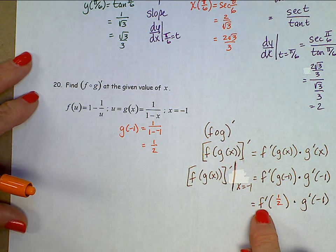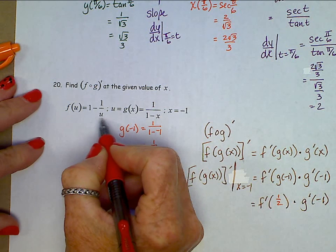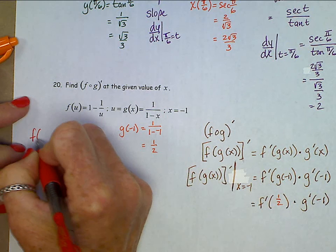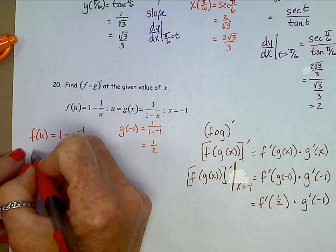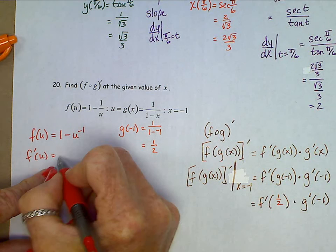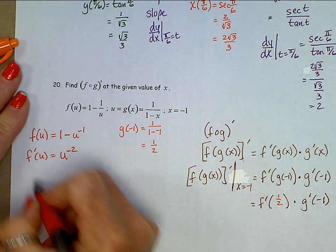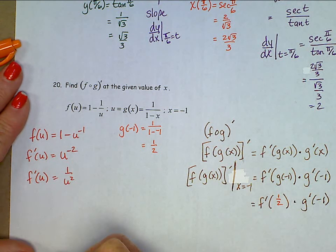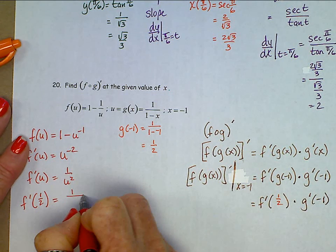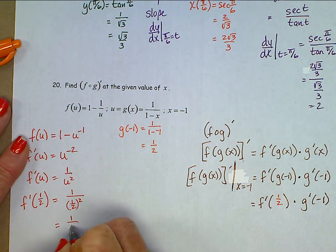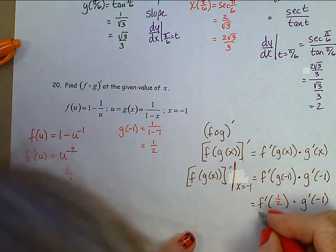This says find f prime of a half. Let's find f prime. First thing though, let's rewrite that f function as 1 minus u to the negative 1, then we don't have to do a quotient rule. This will give us f prime, the negative 1 comes down and turns that positive. We have u to the negative 2. Let's write this as 1 over u squared. Now we wanted f prime of a half. So that's 1 over a half squared, 1 divided by a fourth, which is 4.